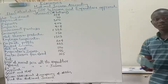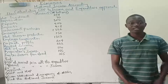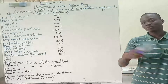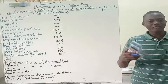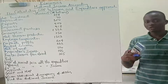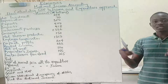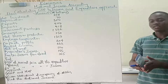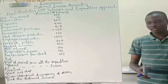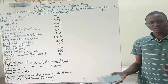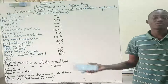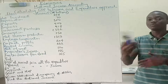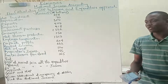Third is the expenditure approach, which involves summing up total spending on currently produced final goods and services. These goods and services have to be final — they cannot be intermediate goods. Intermediate goods are the final goods of some industries that happen to be inputs for other firms, so you don't include their value.